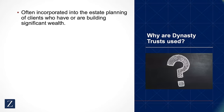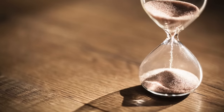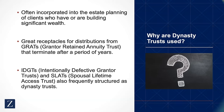Why do we use them? They're usually incorporated into the estate planning of wealthy clients. They're great receptacles for other distributions from other irrevocable trusts, like grantor-retained annuity trusts that have to terminate after a period of years. Also, a dynasty trust is not referring to a specific kind of trust — it may include many different types of trusts, like intentionally defective grantor trusts, spousal lifetime access trusts, beneficiary defective inheritors trusts, and other types of irrevocable trusts that can last for multiple generations.